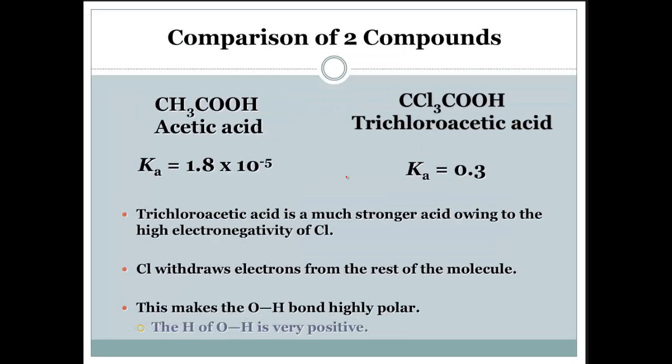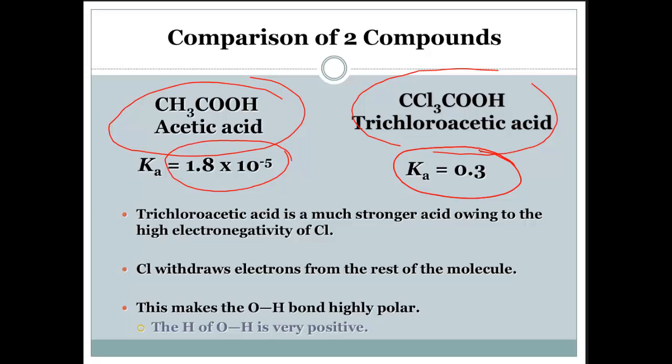So let's take a look at acetic acid and trichloroacetic acid. Look at the Ka's. Acetic acid is times 10 to the negative 5 while the trichloroacetic acid is way, way, way bigger at point 3. Trichloroacetic acid is much stronger acid owing to the high electronegativity of those chlorines. Chlorine withdraws electrons from the rest of the molecule. This makes the OH bond highly polar and the hydrogen of the OH is very positive because it's getting pulled away by those other elements.